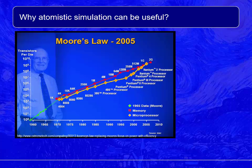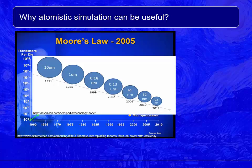In the past five decades, the number of transistors on a single chip doubled every 18 months, known as Moore's Law. As a result, the size of each transistor was reduced by half every 18 months. The channel length was 10 micrometers in 1971, 1 micrometer in 1985, 130 nanometers in 2002, and 22 nanometers in 2012.